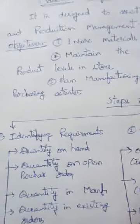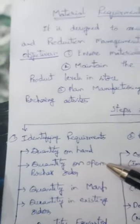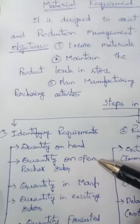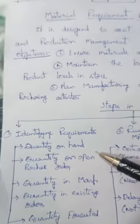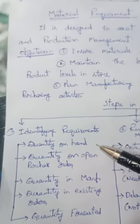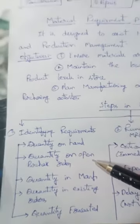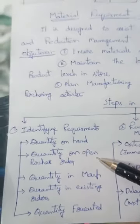In the first step, they identify how much raw materials are required quantitatively. The first element is quantity on hand — how many raw material stocks are available at present in the industry. The production manager should maintain proper records. The next is quantity on open purchasing order — how much order they are going to give to suppliers for different raw materials.